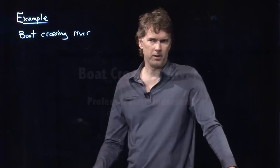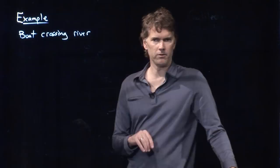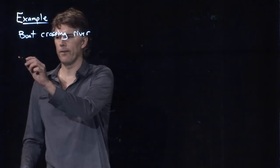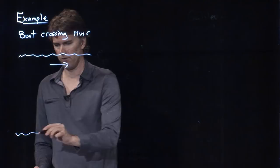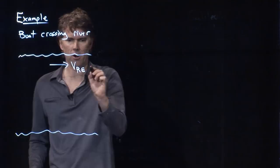Hello class, Professor Anderson here. Let's take a look at an example problem of a boat crossing a river. This is one of these relative motion problems. Let's say that we have the following scenario. We have a river that is flowing in this direction. Here's our river. And we'll call that speed of the river VRE, speed of the river relative to the earth.